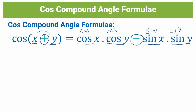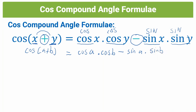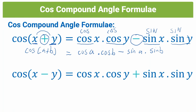For example, if we wanted to simplify cos(a + b), we use the formula and get cos a times cos b, and we change the sign because we had a plus — so we put a minus — giving us minus sin a times sin b. This is how we use the formula to simplify a compound angle. You can also have a minus; the trick is cos cos sin sin, change in sign.